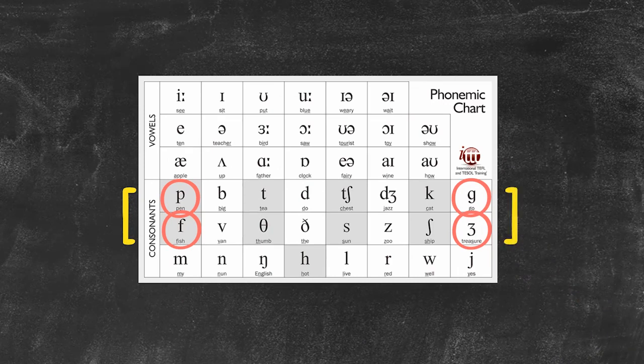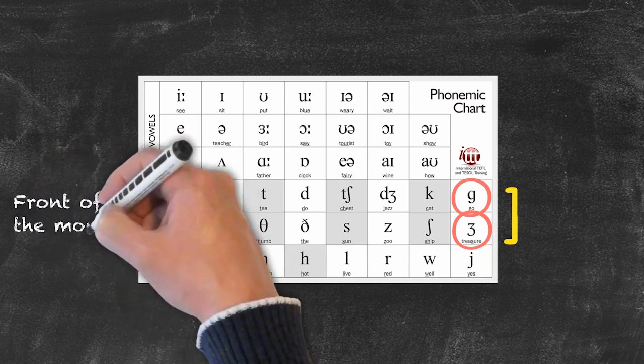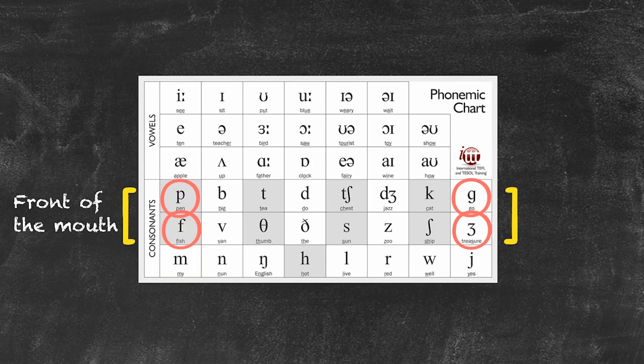They're arranged this way because if we analyze the way we speak, we're using the front of our mouth to use these sounds as in P and F. I'm using my lips and my teeth to produce those sounds.